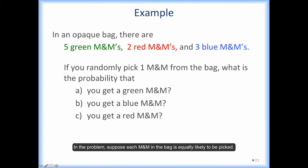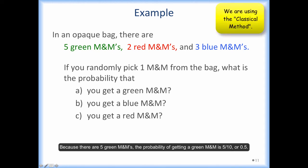In the problem, suppose each M&M in the bag is equally likely to be picked. There is a total of 10 M&Ms. Because there are 5 green M&Ms, the probability of getting a green M&M is 5 over 10, or 0.5.